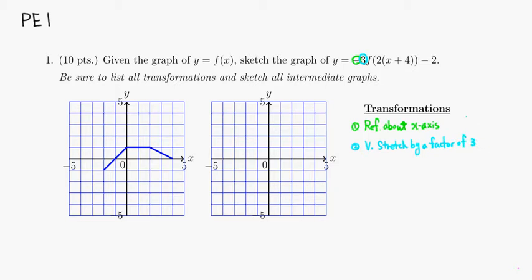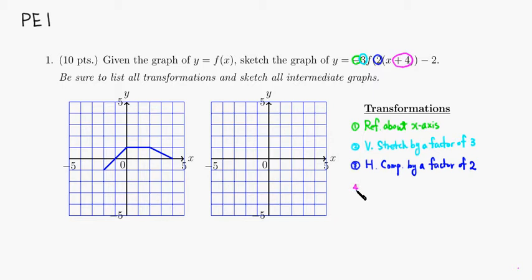The third transformation: multiplying by 2 inside gives a horizontal compression by a factor of two. Then we have plus four, which will shift the graph left by four units. And the last one is going to shift down by two units.